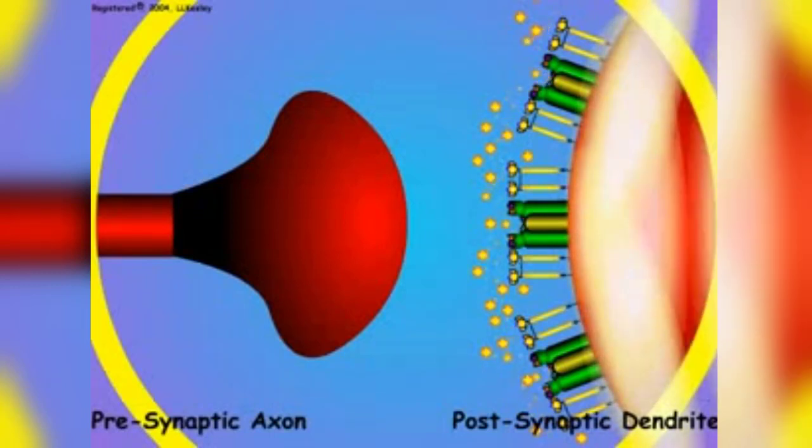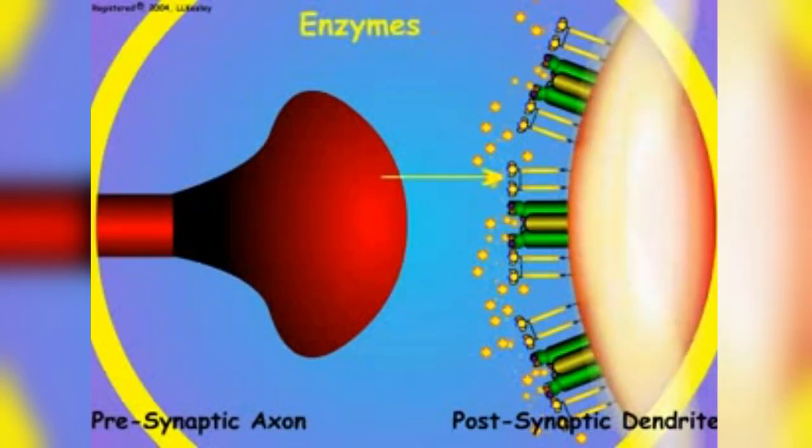To stop the depolarization of the postsynaptic region by the neurotransmitter chemicals, proteins called enzymes are present that destroy the neurotransmitter chemicals.